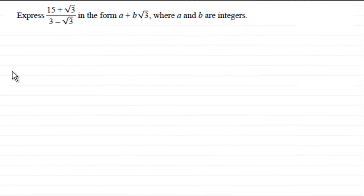Hi, now in this question we've got to express (15 + √3)/(3 - √3) in the form a + b√3 where a and b are integers.